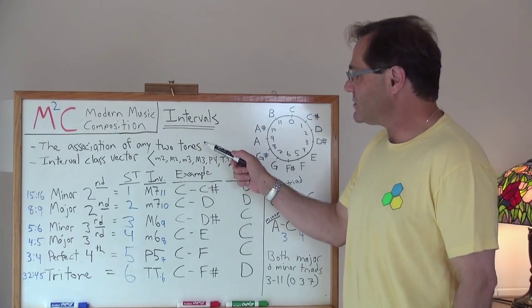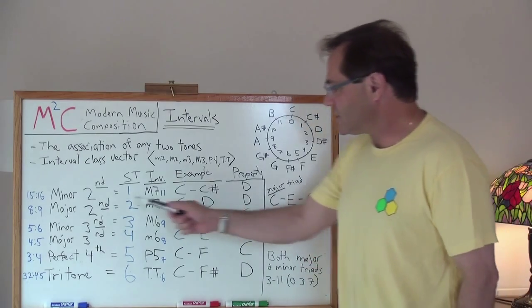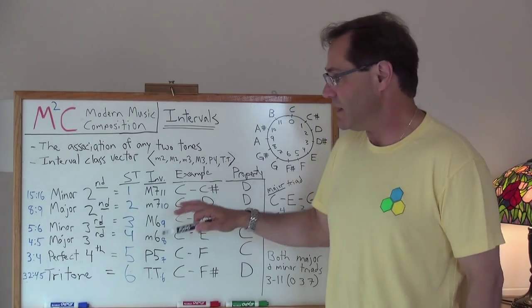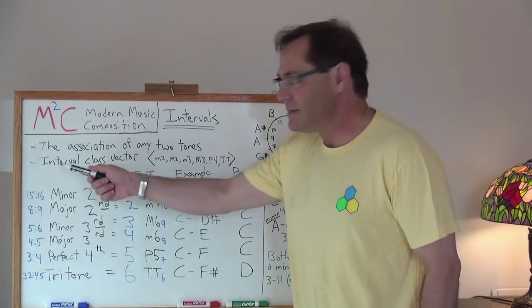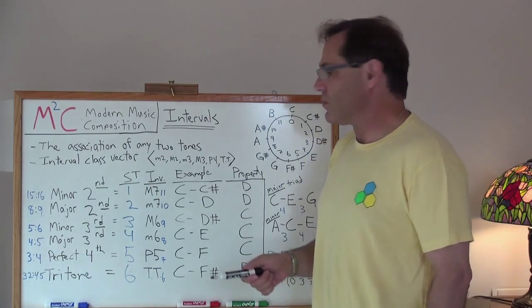So the interval is just an association of any two tones. And so let's just get right into it. I've laid it out like this for a reason and you'll see why. Because in set theory we talk about the interval class vector.